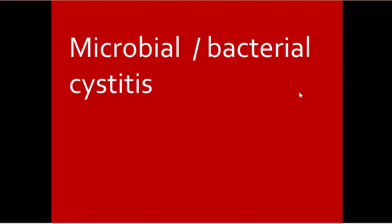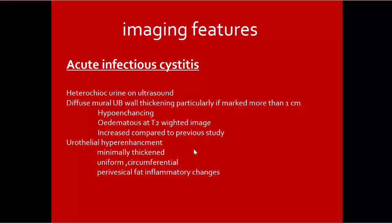The first type of cystitis is microbial or bacterial cystitis — the most common type. Imaging features of bacterial cystitis: in acute infectious cystitis, we find heterechoic urine on ultrasound, diffuse mural urinary bladder wall thickening particularly if marked more than one centimeter, hypo-enhancing on CT, edematous on T2-weighted MR, with urothelial hyper-enhancement, minimally thickened uniform circumferential wall, and perivesical fat inflammatory changes.